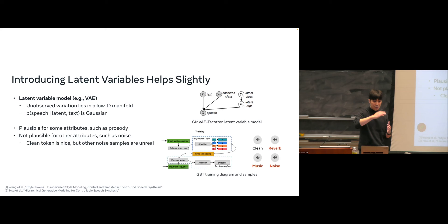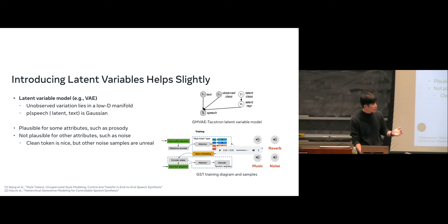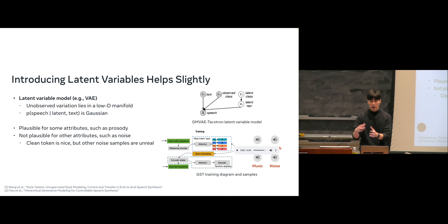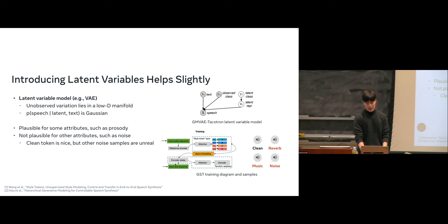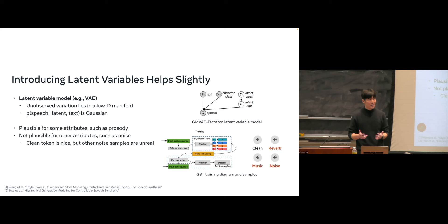There are constraints: the latent must be low-dimensional, useful for characterizing variation like prosody — happy or sad — which can be modeled in low-dimensional space. But for more in-the-wild variation like different kinds of background noise, it has limited capacity. For example, Global Style Token from Google has different memory tokens corresponding to different audio modes: clean speech, reverb, or music. But the generated music token is not very realistic — it still has limited capacity to generate any kind of data seen in training.